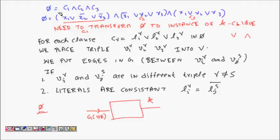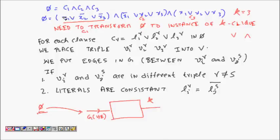I take the 3-CNF formula with k clauses — here k equals 3. I transform it into a graph as input for the k-CLIQUE problem. If the graph has a clique of size k, it means the circuit can be satisfied — there exist values of x1, x2, x3 making φ equal to 1. If there is no clique of size k, there is no satisfying assignment.